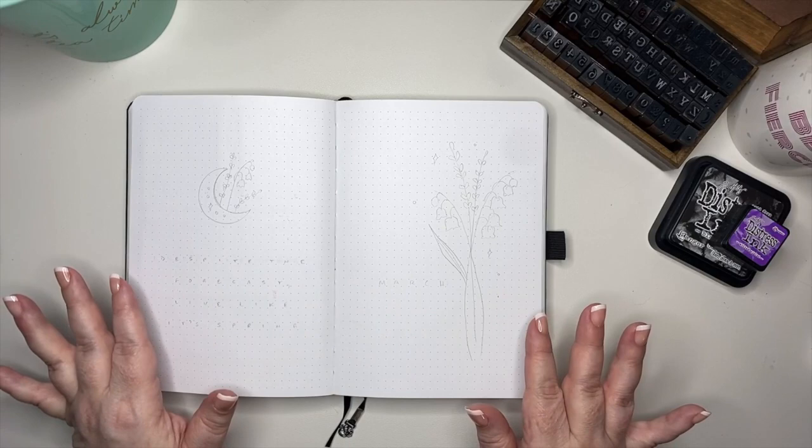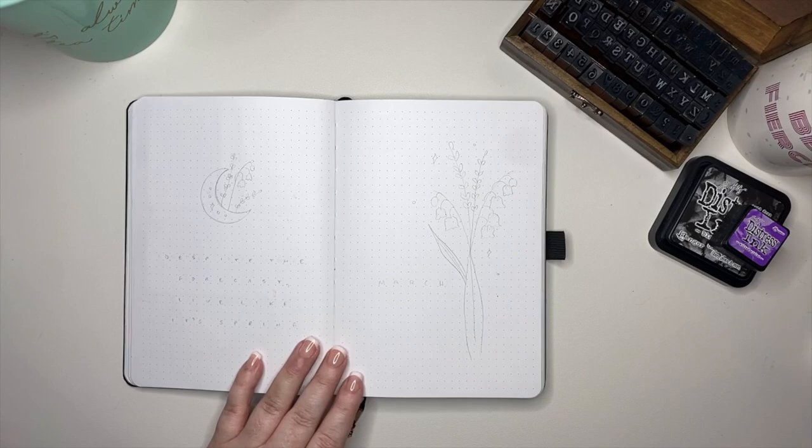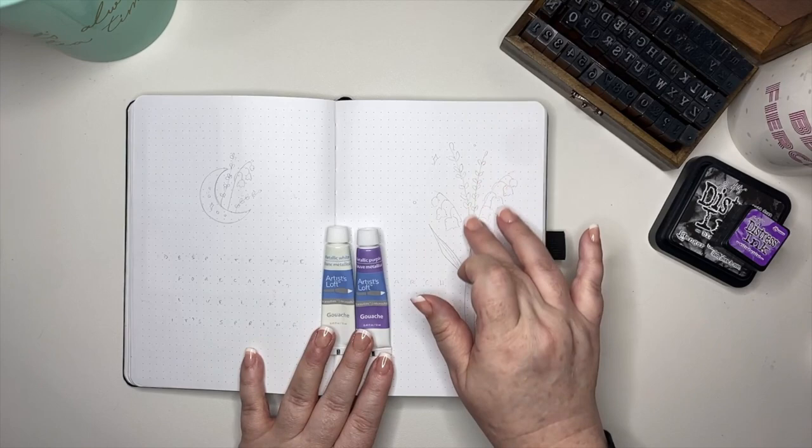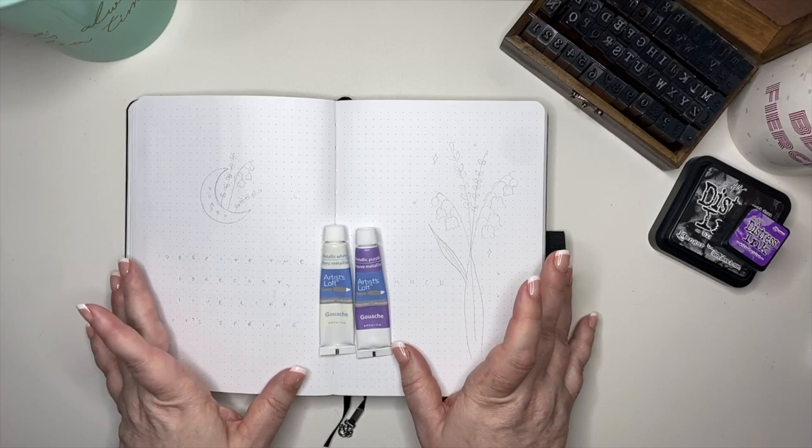Now these are very simple flower doodles to draw, so I'm going to zhuzh these up a little bit with some metallic paint. These are very economical gouache paints that you can pick up at Michael's if you live in the United States. I'm just going to go ahead and get a little bit of metallic sheen onto the flowers, then we're going to trace them.